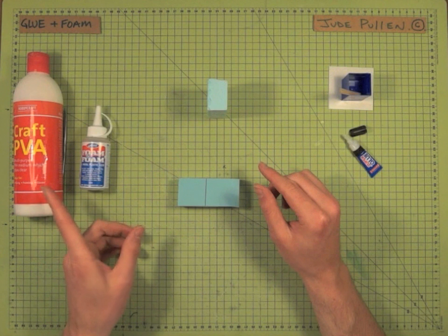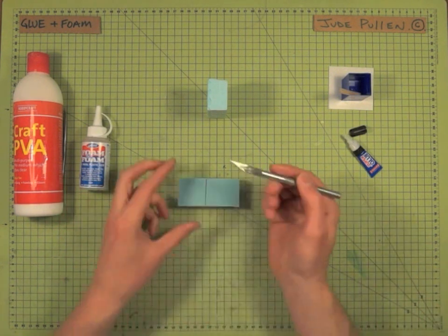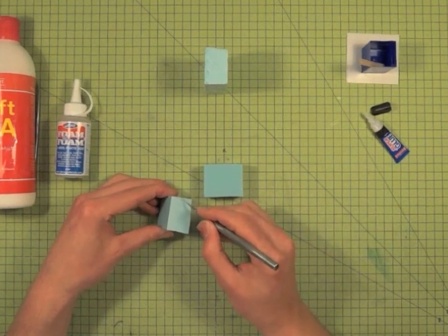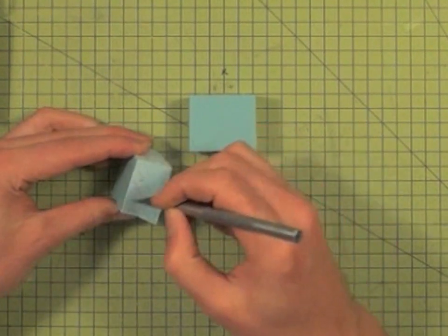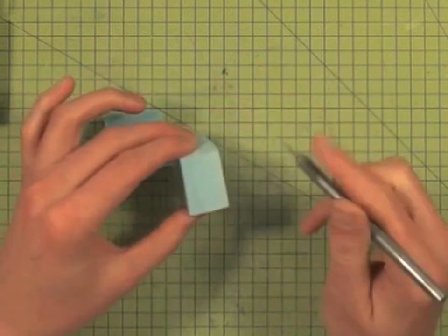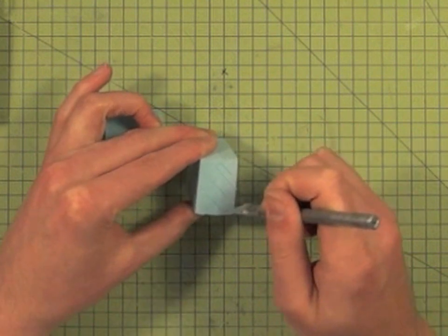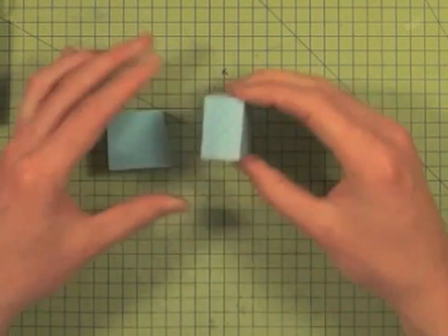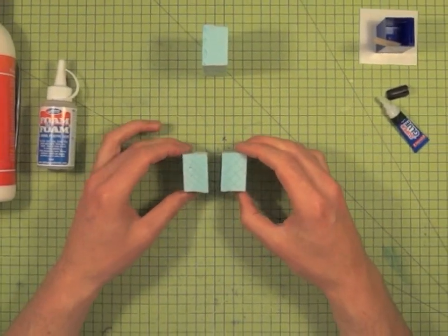If you do have the time, PVA does glue quite well, although you might want to get a scalpel and key the surface just like this, which just means it binds a little bit better. That's quite a useful technique in a variety of materials to make sure the surface is rough if you're wanting two things to glue together.